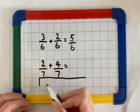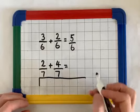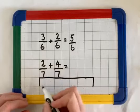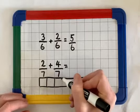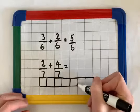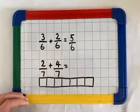so I've got my whole, my whole. If I split that into 1, 2, 3, 4, 5, 6, 7 equal parts.